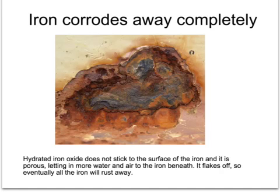As opposed to aluminium oxide, which protects aluminium from further corrosion, iron oxide has a very different structure. Hydrated iron 3 oxide, or rust, has a very spongy texture. It absorbs water, and once formed it flakes off away from the surface of the iron, revealing fresh iron to be corroded underneath. So iron continues to corrode until it eventually weakens due to holes appearing, and the iron or steel item needs to be replaced.